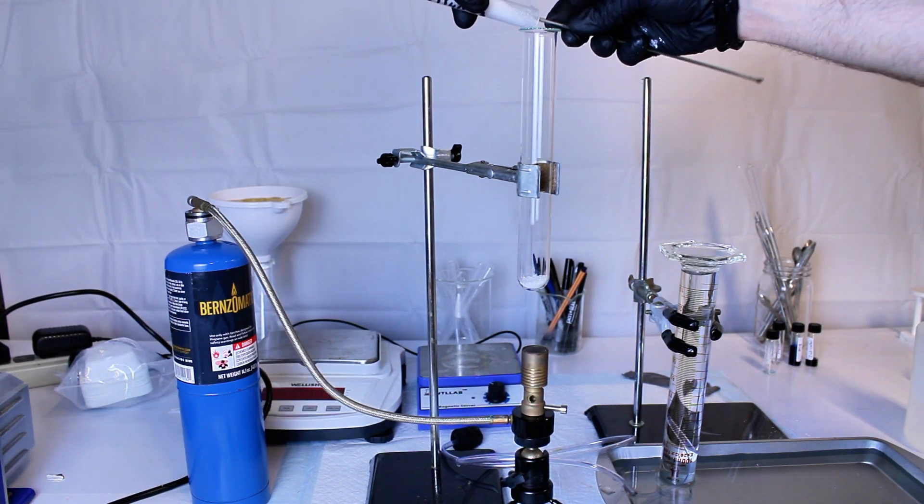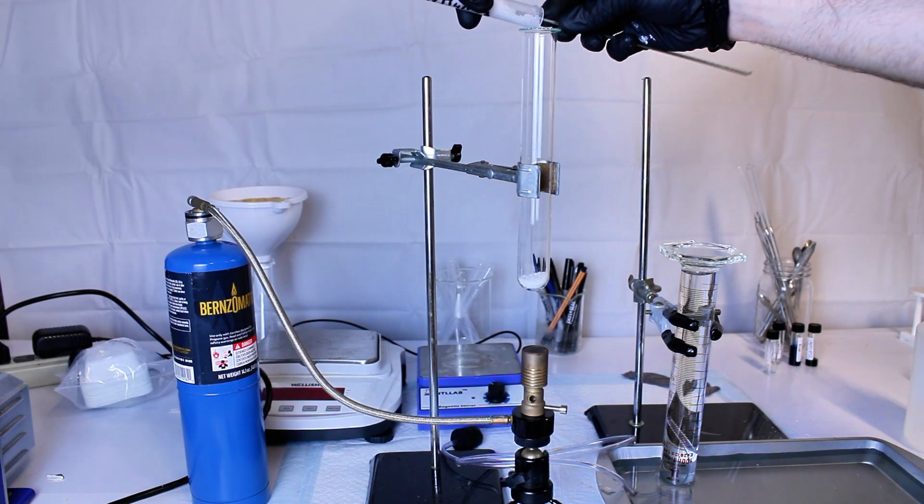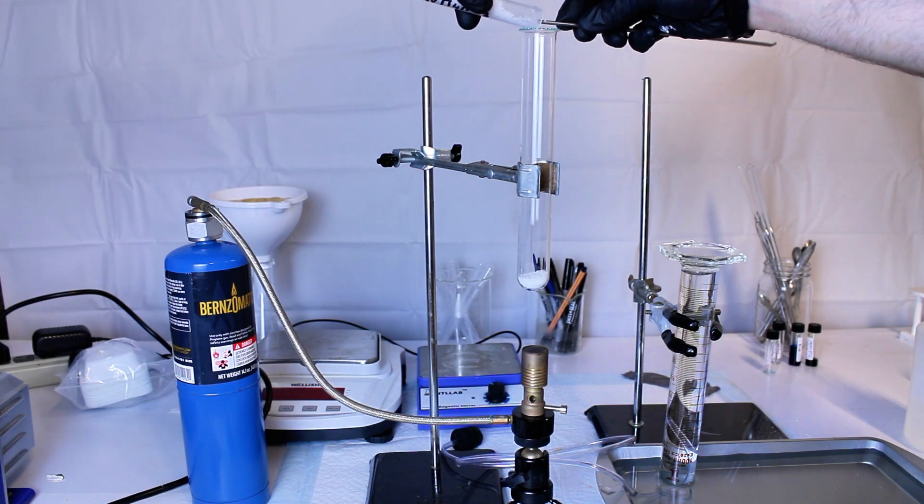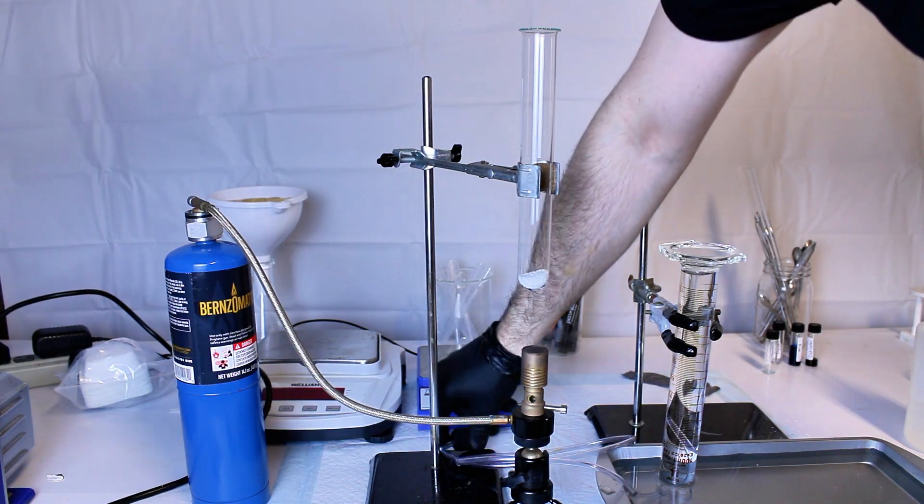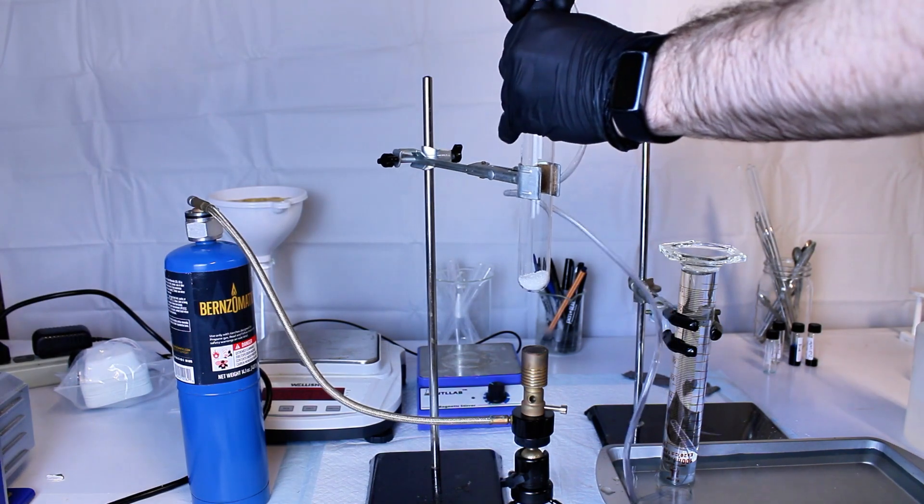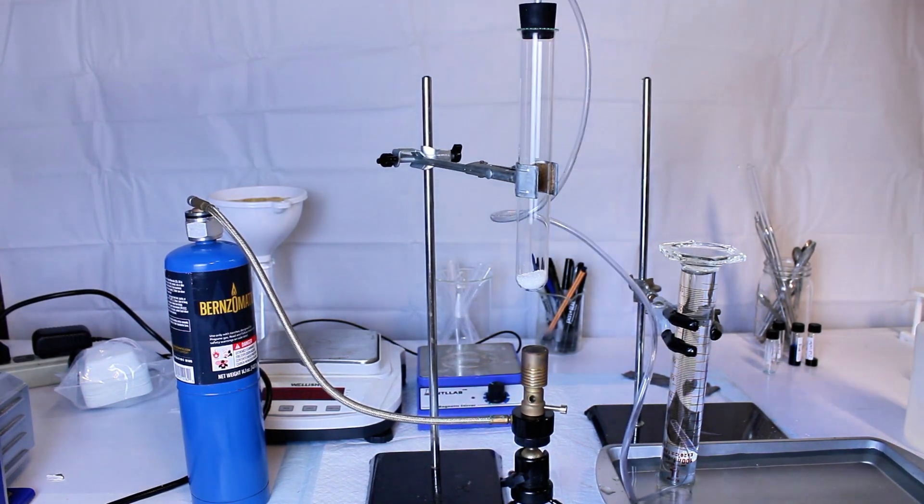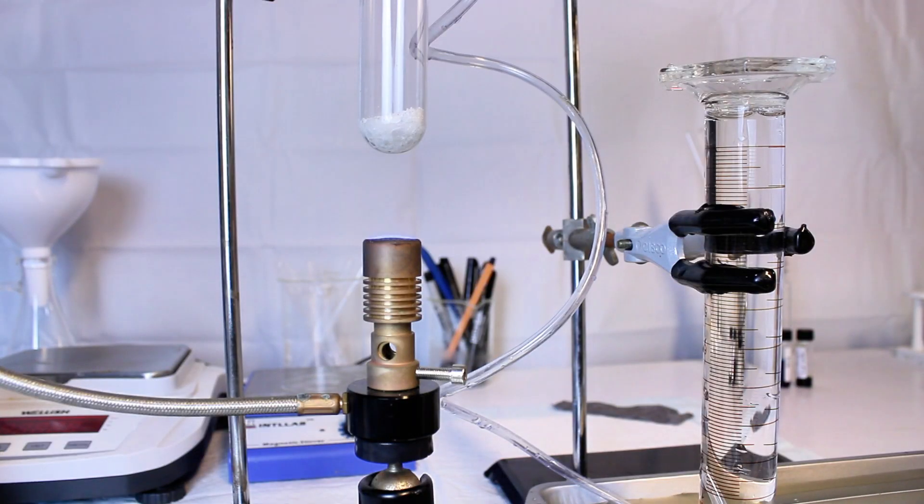In any case, to make nitrous oxide, the first thing I do is add about 2.5 grams of my ammonium nitrate to a large test tube. The test tube is then plugged with a rubber stopper that I fed a line through and into a graduated cylinder that's filled with water and suspended above a tray of water.